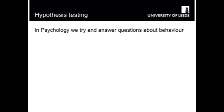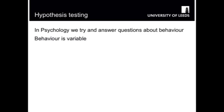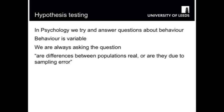In psychology we're trying to answer questions about behaviour, and behaviour is variable. While we might want to know about cognitive processes underlying behaviour, we can't measure those cognitive processes directly. Therefore we have to use behaviour and analysis of that behaviour to answer our questions. One of the things we're trying to do is establish whether differences between two populations are due to an experimental manipulation, a difference between those populations such as personality types, or whether it's down to chance or sampling error.